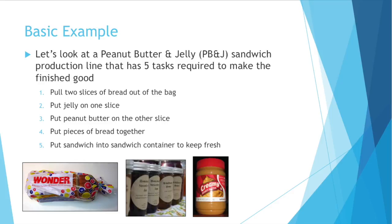To understand why lines need to be balanced, you first have to realize why lines become unbalanced. So let's start with a basic example — a PB&J, a good old peanut butter and jelly sandwich. Let's pretend we have a production line that makes PB&Js. There are five basic steps: pull two slices of bread out of the bag, put jelly on one slice, put peanut butter on the other, put the pieces of bread together, and put the sandwich into some sort of container.